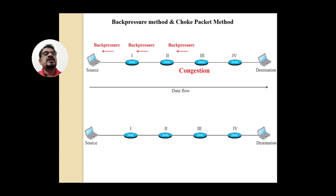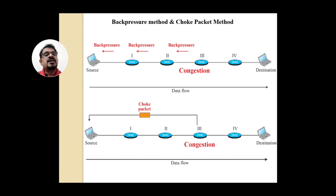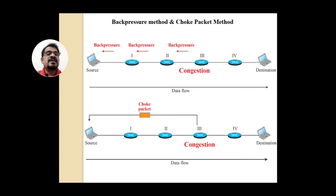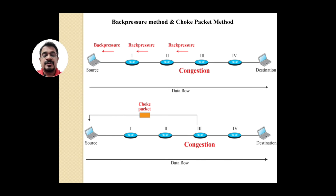The second mechanism is the choke packet method. Whichever router is congested immediately sends a small packet to all sources indicating that this route is congested. The source stations can then divert traffic to another route, avoiding the congestion in the network and improving overall performance.